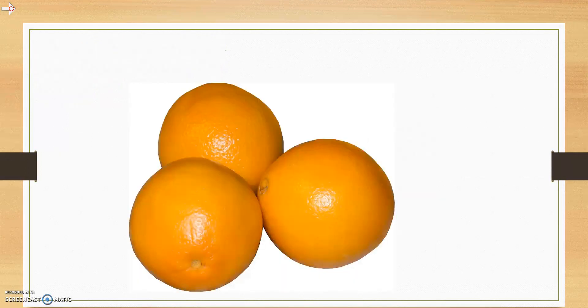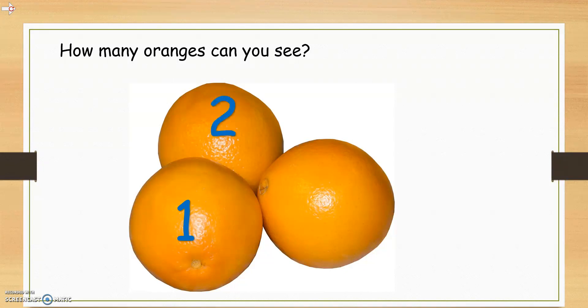Now, have a look at the oranges. How many oranges can you see? Pause this video and count them. Let's count them together. We have 1, 2, 3. That's right, there are 3 oranges.